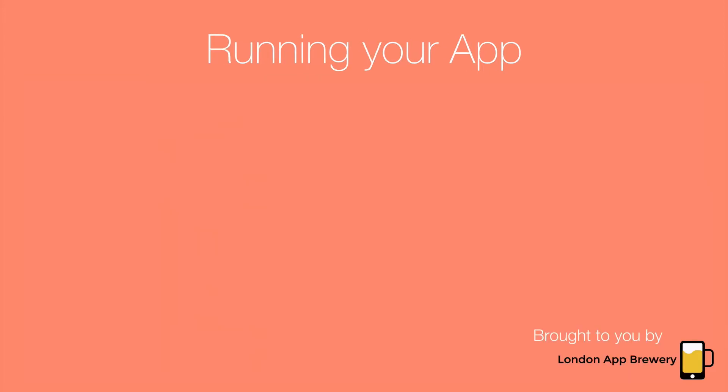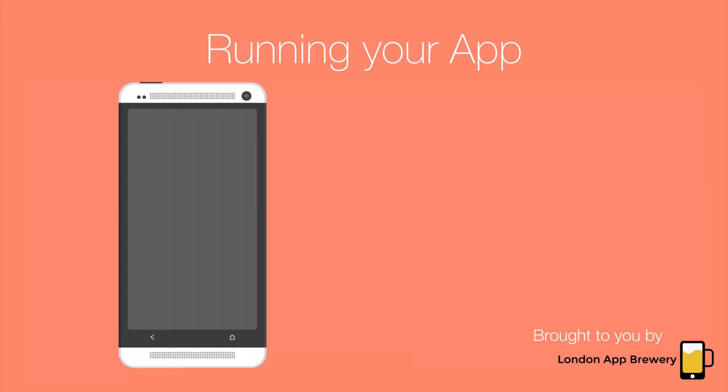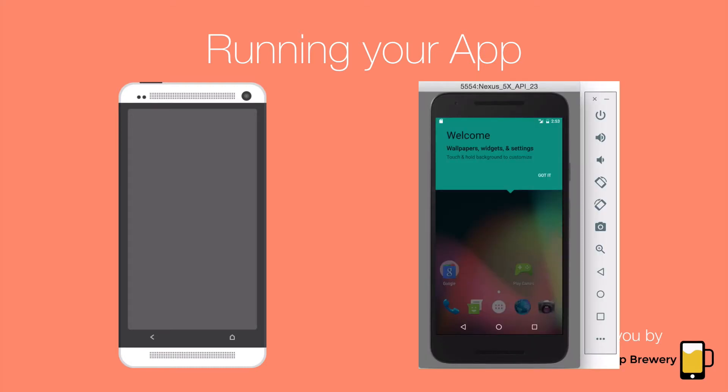When it comes to running your apps, you'll either use a physical Android phone or tablet that you have plugged into your computer. And if you don't have one of those, you're going to be using Android Studio's emulator that's going to be running a pretend phone on your machine. However, the Android emulator isn't the fastest thing in the world, and you might as well invest in a cheap Android phone for development purposes, because it'll just make everything a lot more fun.